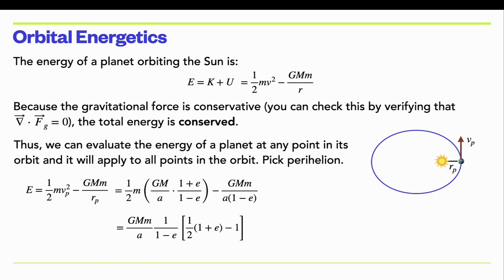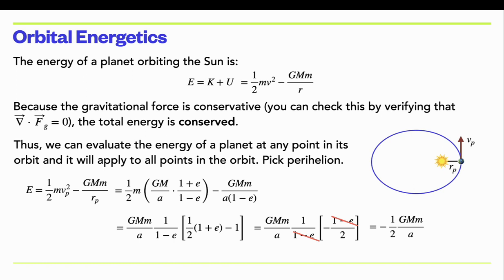The first term leaves ½ times (1 + e), and in the second term you factor out all of this entire term, so that's just minus 1. Simplifying a little bit more, you get (1 + e − 2)/2, and 1 − 2 gives a minus 1. Then you can factor out the negative sign. The (1 − e) terms cancel, and you have this negative sign and that 1 and the ½ that can come out in front.